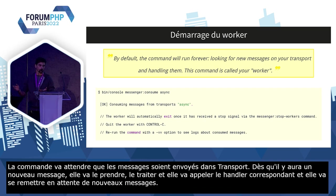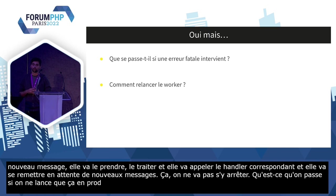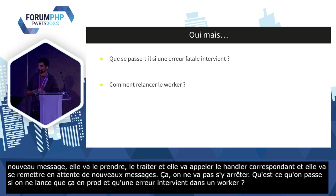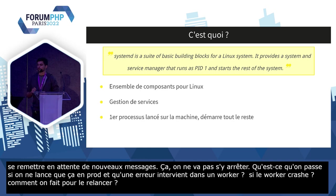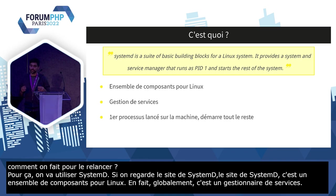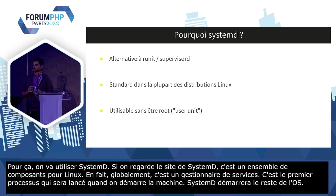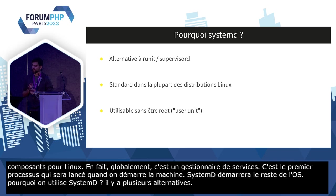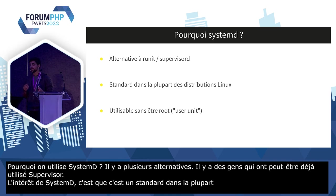Sauf qu'on ne va pas s'arrêter là, parce que qu'est-ce qui se passe si on lance juste ça en prod et qu'une erreur intervient dans notre worker ? Si le worker crache, comment on fait pour le relancer ? Pour ça, on va utiliser Systemd. Systemd, c'est un ensemble de composants pour Linux, globalement un gestionnaire de services — c'est le premier processus lancé au démarrage de la machine et c'est lui qui démarre tout le reste de l'OS.